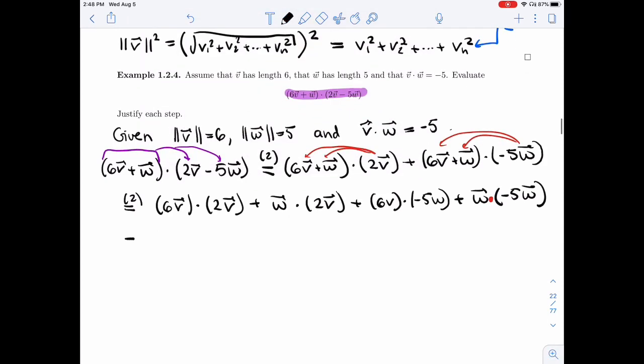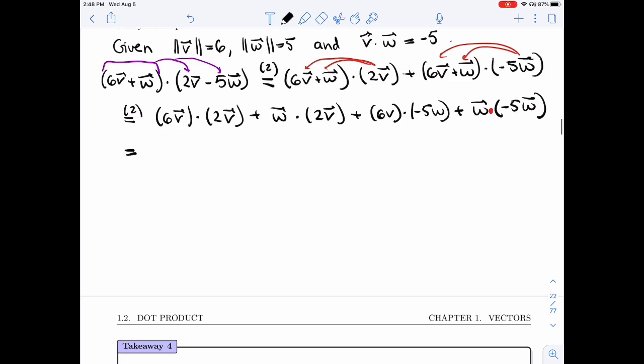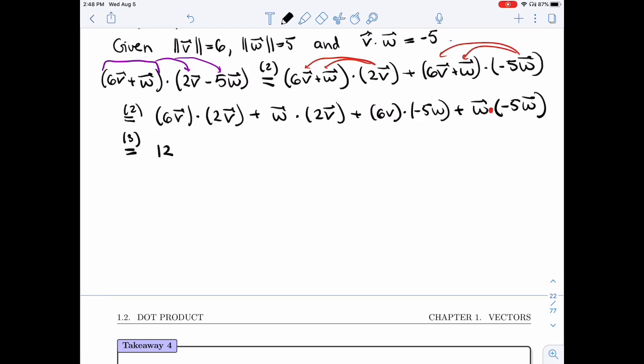Now I will use property three. That tells me that if I have a constant, either with U or with V, I can pull it out. I'm going to pull all the constants at once, so that will be property three. I'll get 12 V dot V. It's tempting to use V squared, but again, we will see other products of vectors as well. So V squared, it's not clear which product you mean.